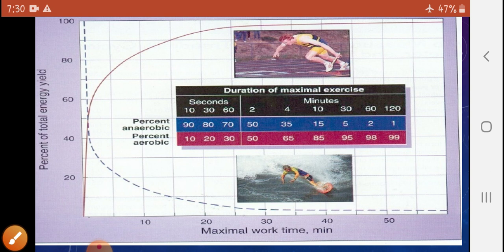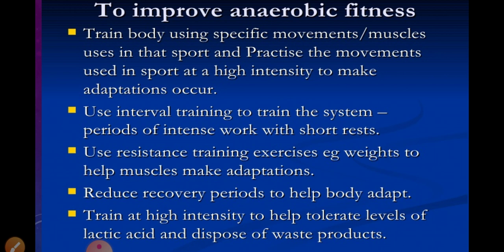To improve anaerobic exercise: train the body using specific movements that muscles use in sports, and practice those movements at high intensity to make adaptations occur. Use interval training — periods of intense work followed by short rest — varying from high intensity to lower intensity. Use resistance training, such as fixed weights, to help muscles make adaptations. Reduce recovery periods to help the body adapt. Train at high intensity to help tolerate levels of lactic acid and dispose of waste products.